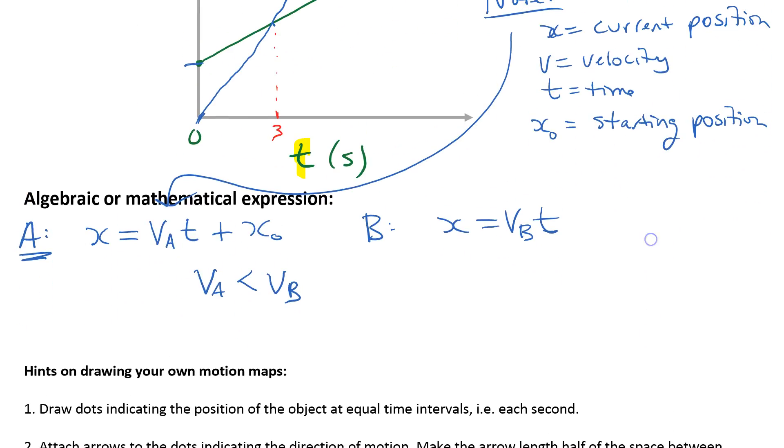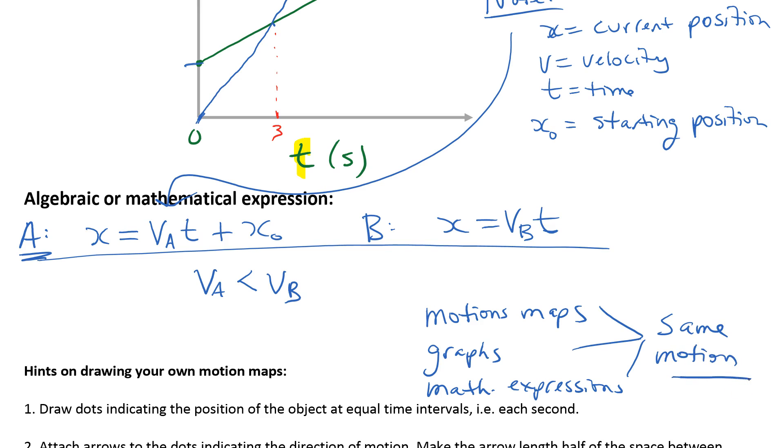Don't worry at this point if this is a bit confusing because we're going to do more practice with that. I just wanted to be able to relate to you the fact that we can have motion maps and we can have graphs and we can have algebraic or mathematical expressions. All for the same motion. Just different ways to represent the same thing. So we are going to get into the habit of being able to switch between those three different ways to represent motion.